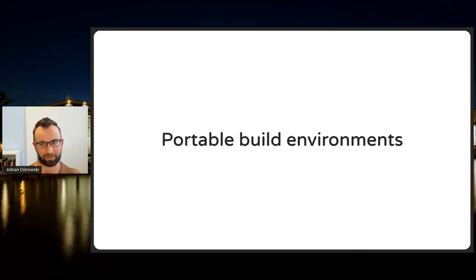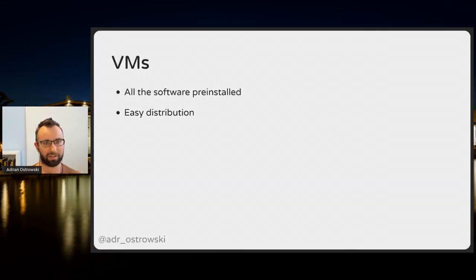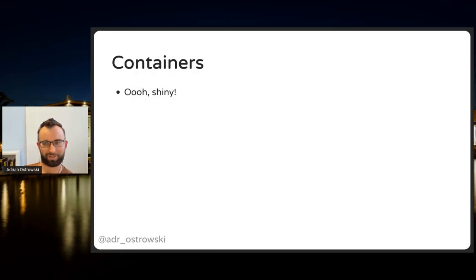Let's talk about build environments. Having portable build environments is a great benefit — you can ensure everyone on the team builds the same way and have reproducible builds. One way to provide this is VMs: provide a VM with the toolchain pre-installed and have users run builds on them. Containers are faster and smaller than VMs, but Docker-style containers don't pair well with switching between different toolchains.